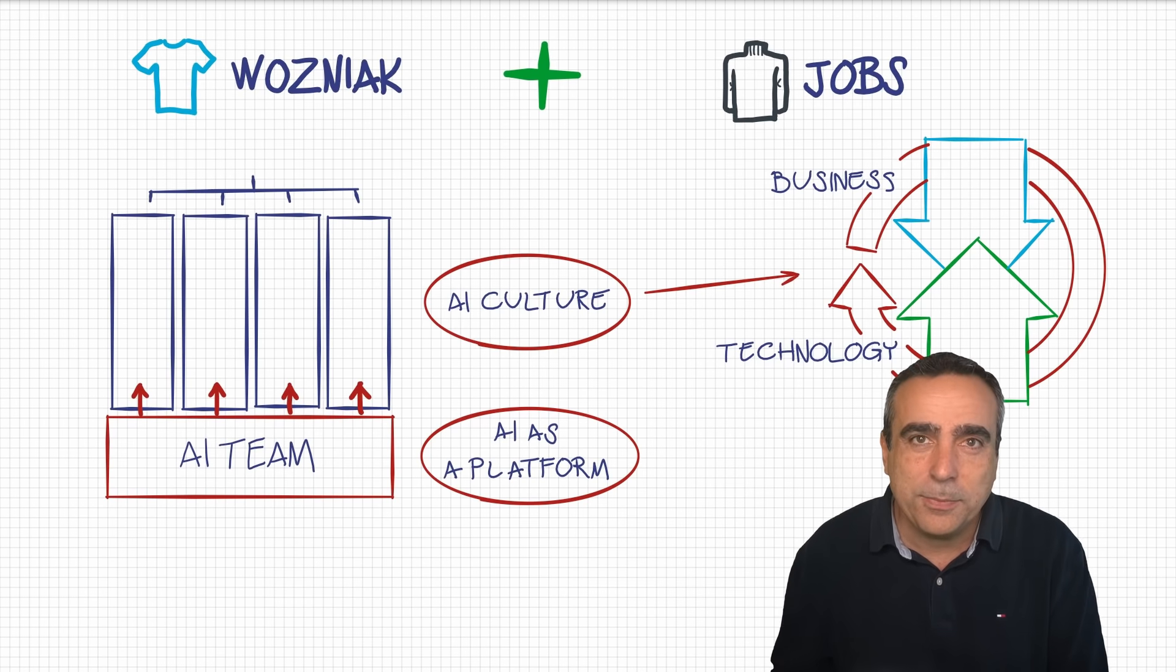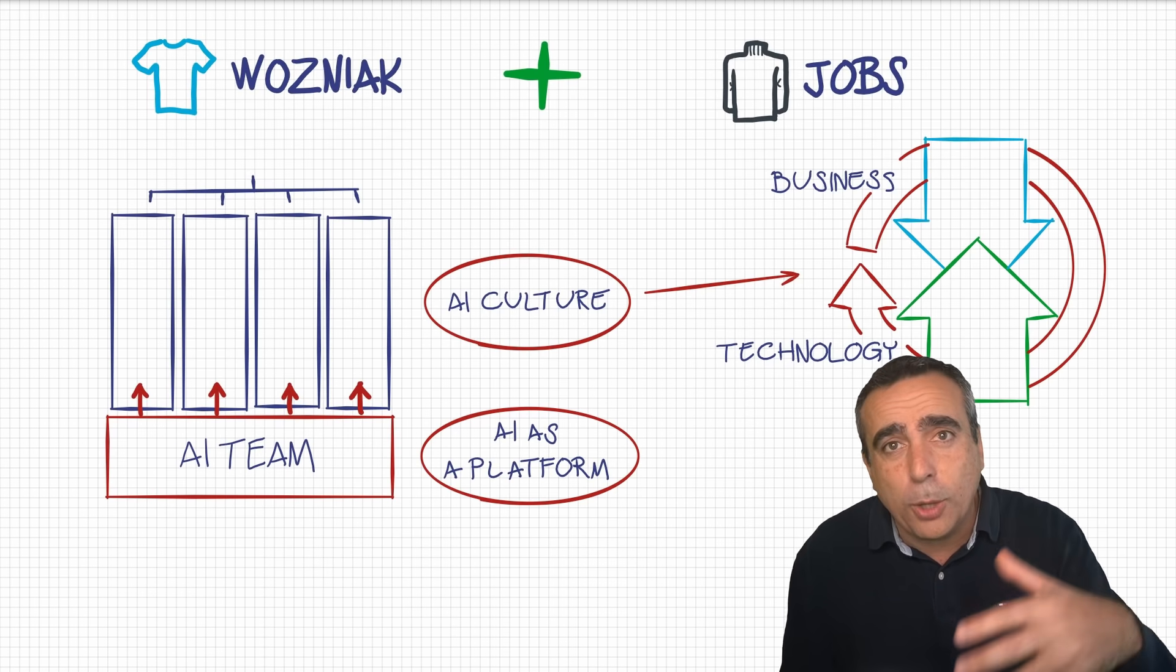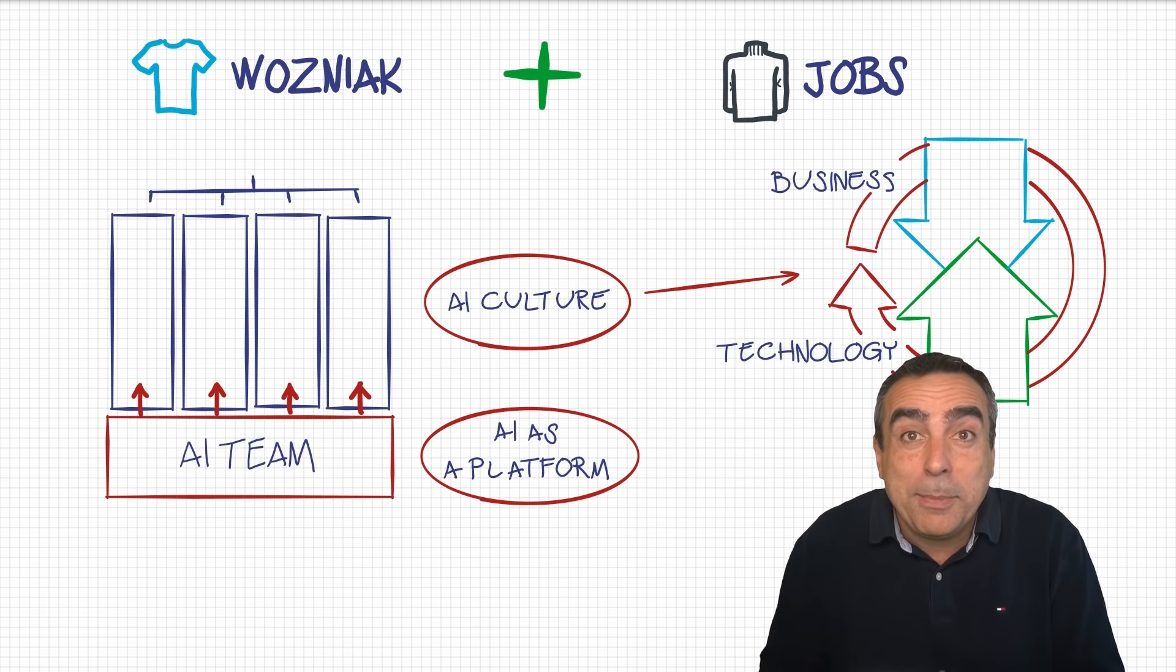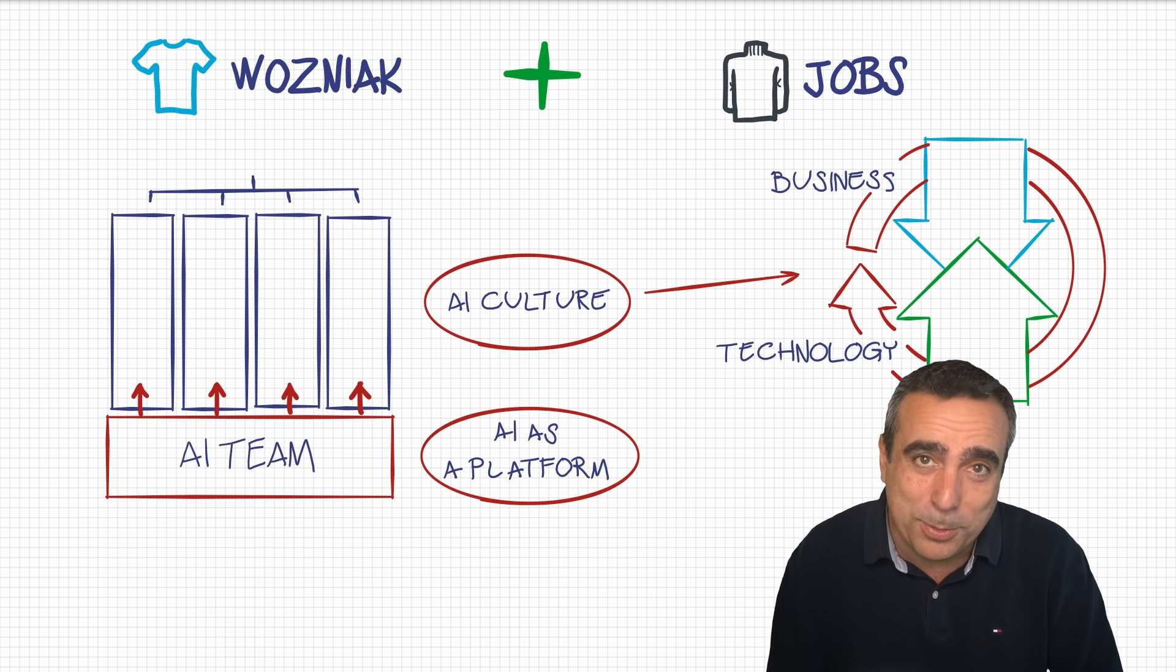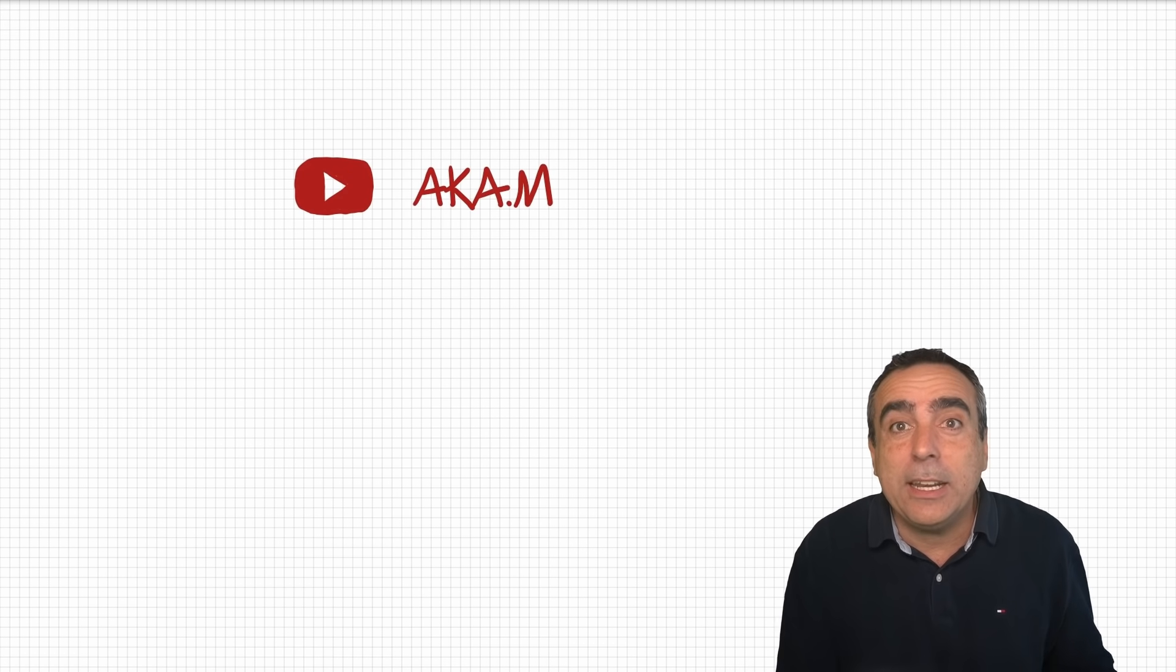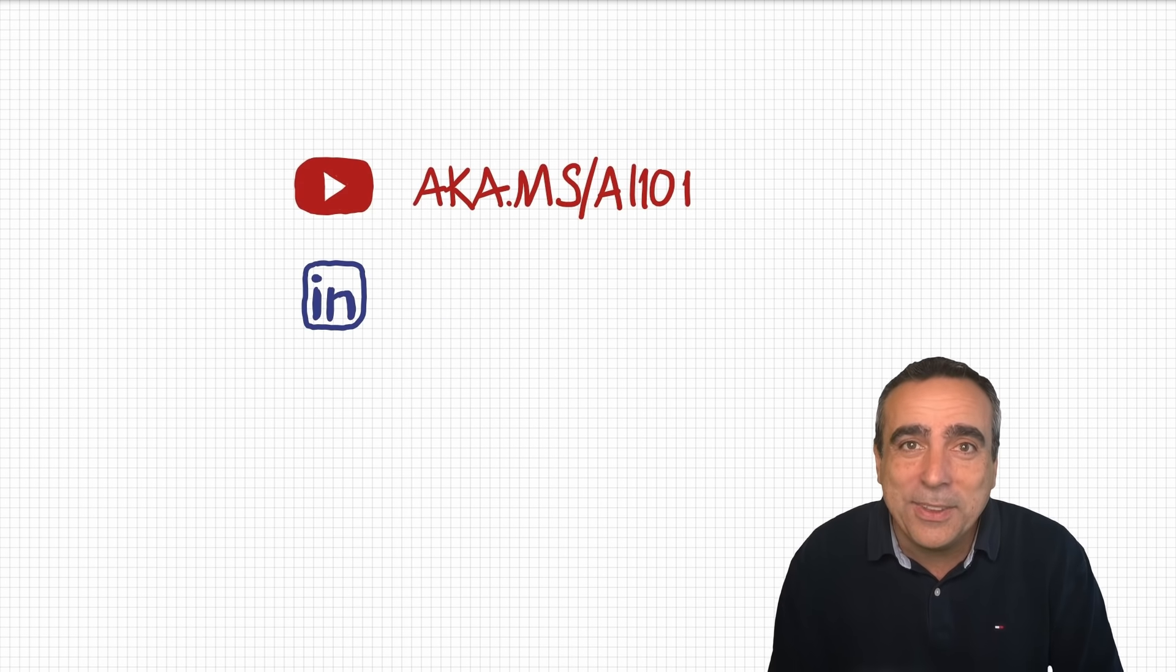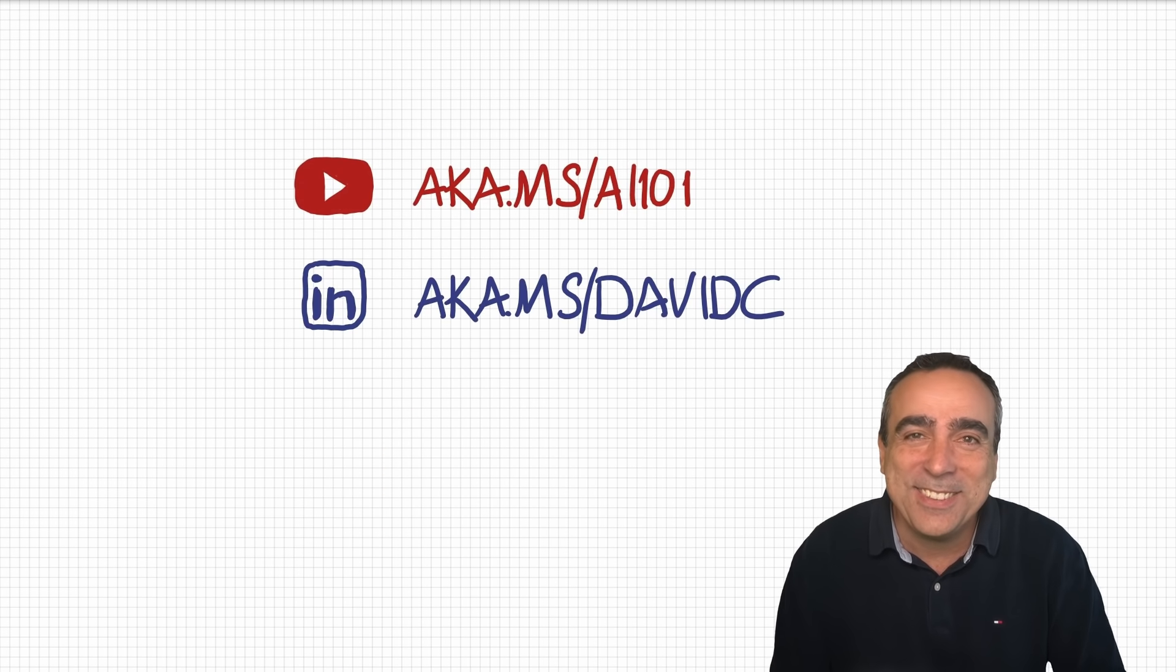In the next videos, we are going to see in more detail how to implement that cycle. In the next one, we will see how you can explore ideas using this top down, bottom up approach. And then we will also explore the implementation in several videos in a cycle that is called MLOps. Okay, thank you for watching. Remember that you can watch these videos and the equivalent for technology at aka.ms slash AI101 and you can follow me on LinkedIn at aka.ms slash David C. Thank you.